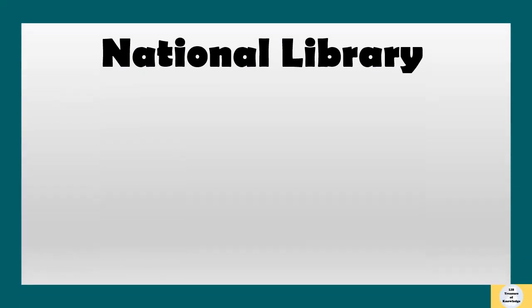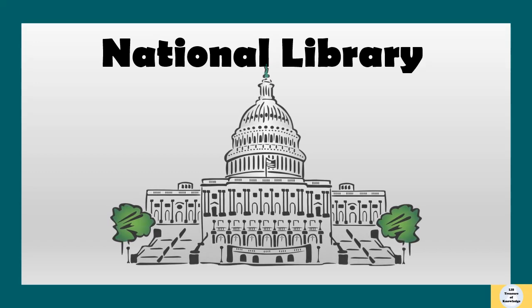Now we'll see about types of library. The first one is national library. A national library is a library specifically established by the government of a particular country to serve as the repository of information for that country. It includes collecting and preserving the literature of the nation both within and outside the country.